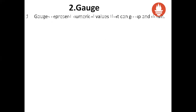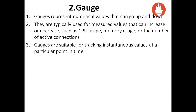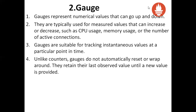Consider potential edge cases and double-counting scenarios. The next type is gauge. Gauges represent numerical values that can go up and down. Unlike the counter type, where the numeric value only goes up, this disadvantage is solved with gauges. They are typically used for measured values that can increase or decrease, like CPU usage, memory usage, or the number of active connections. Gauges are suitable for tracking instantaneous values at a particular point in time. Unlike counters, gauges do not automatically reset or wrap around — they retain their last observed value until a new value is provided.